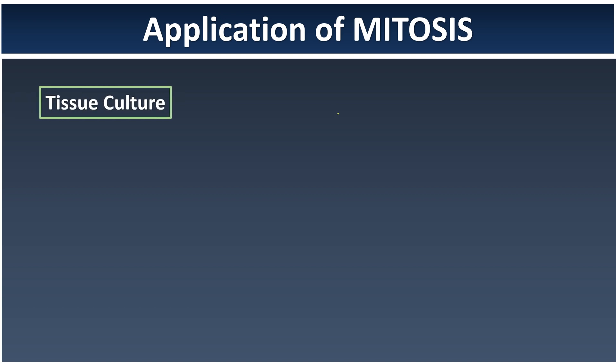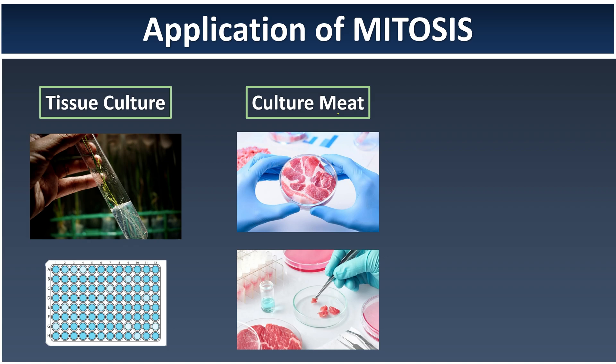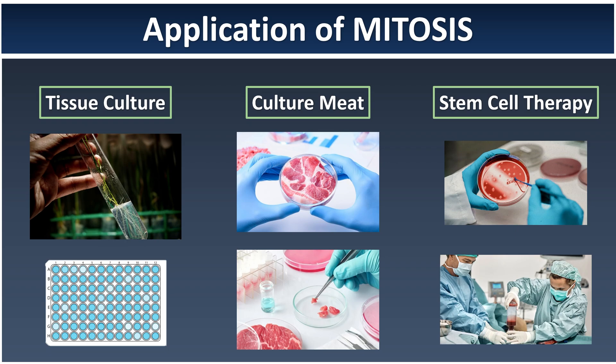Let us learn some of the applications of mitosis in our real life. The first one is tissue cultures, where we are able to clone plants in a science lab. We can also clone meat in a science lab — eventually making burgers from lab-produced meat. In the medical field, we can use stem cell therapy to repair damaged tissue in our body.